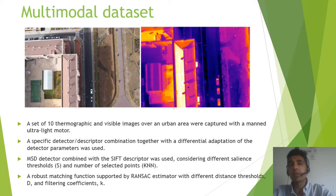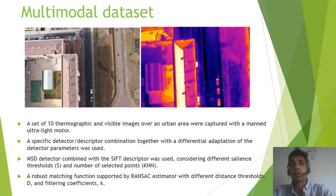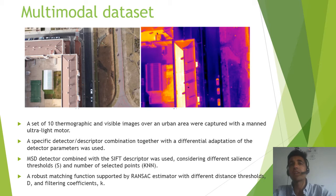The salience represents the level of dissimilarity between neighboring pixels — that is, the way a keypoint is different. In the end, a robust matching function supported by a RANSAC estimator with different distance thresholds (d) and different filtering coefficients (k) was used.